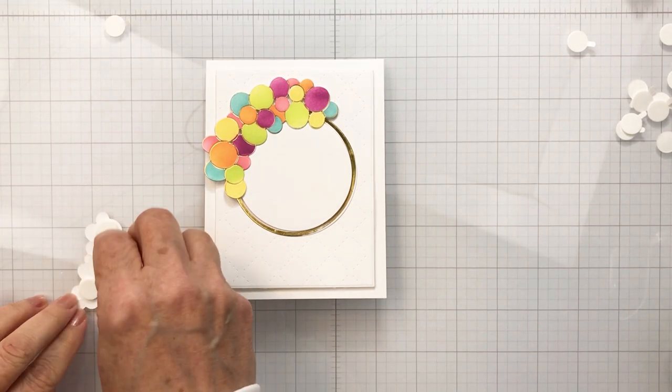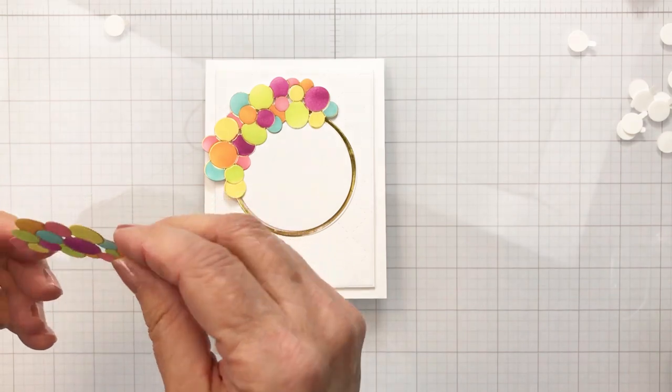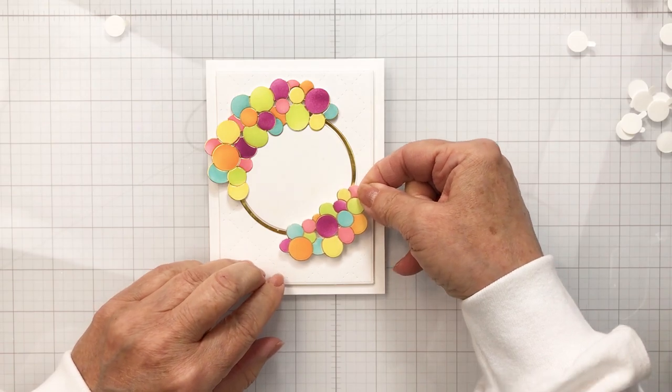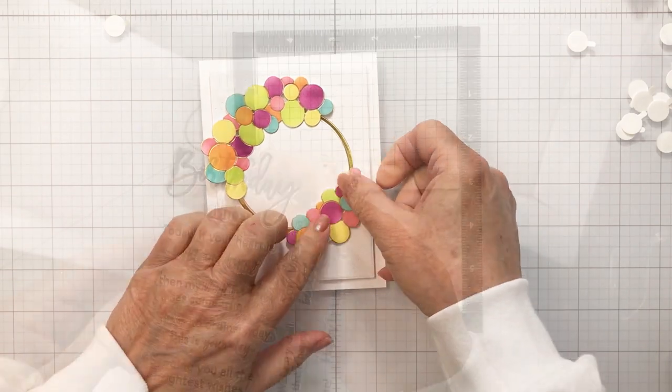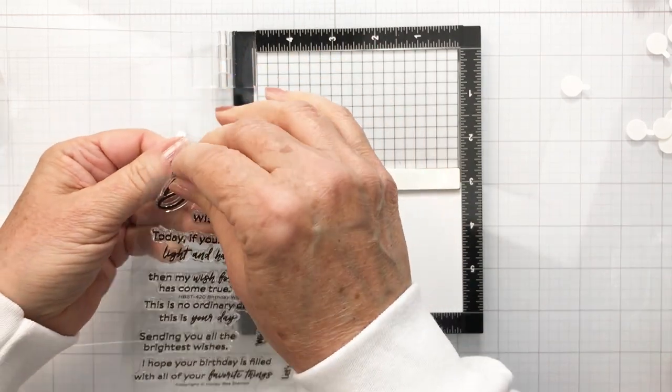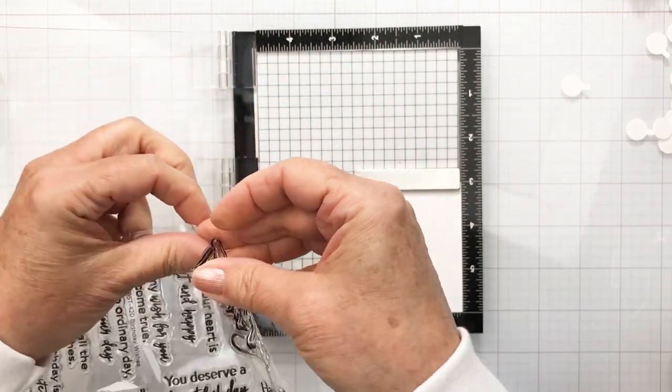The actual foiled circle is just adhered flat to my card base with a little bit of liquid adhesive and here you can see that I'm attaching my balloons to my arch here with a little bit of foam adhesive. I didn't show you the ink blending on the smaller balloon bunch there because it's just the same as the larger bunch, but I just love how that turned out and those are both obviously hot foiled.